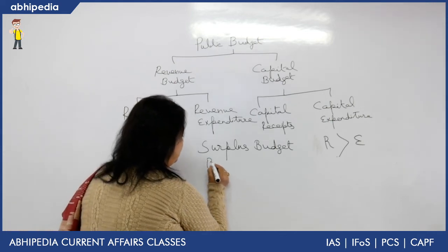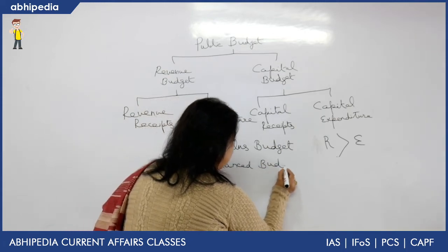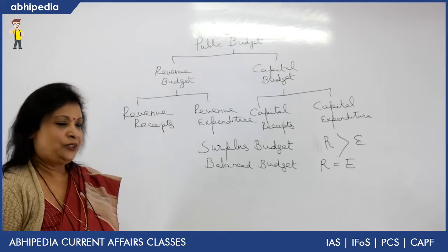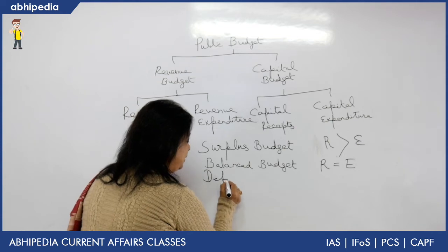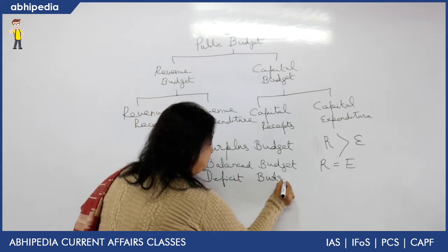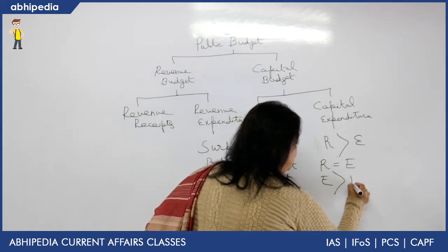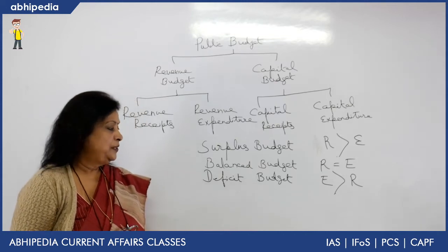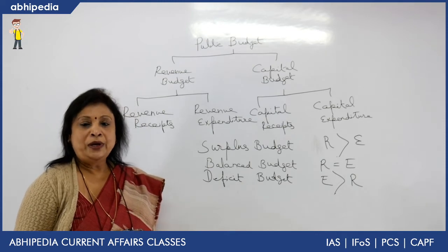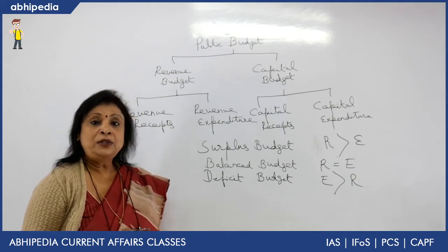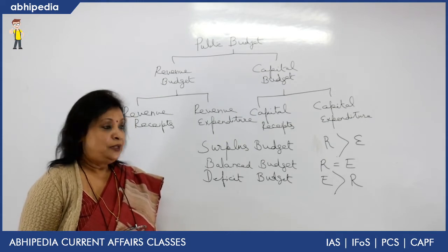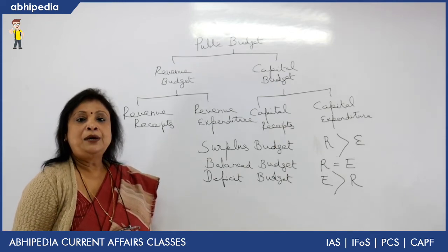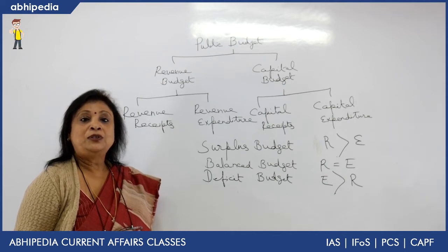Then we have a balanced budget, which is when income is equal to expenditure — revenue equals expenditure. But we are more concerned with the deficit budget. A deficit budget is when expenditure is more than revenue. This kind of budget is recommended for underdeveloped countries like India, so that it leads to more economic growth and development and helps increase the level of aggregate demand. However, we have to use it with caution so that there is not too much deficit, as that can lead to a debt trap and become inflationary in nature.